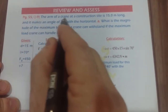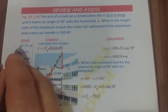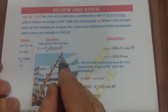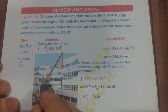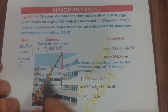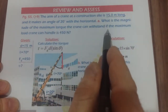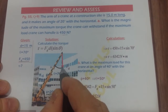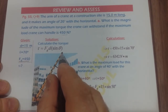Question number nine: the arm of a crane at a construction site is 15 meters long. The crane is used to lift objects to the top of a building. The arm makes an angle of 20 degrees with the horizontal. The maximum load the crane can handle is 450 newtons, suspended from the top of the crane arm, applying a force and producing a torque.